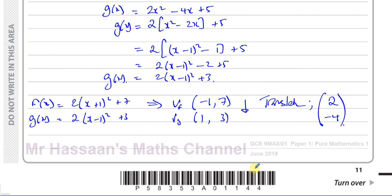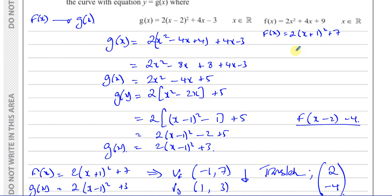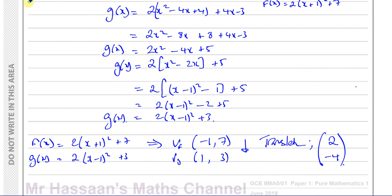We could also have seen that g of x is like f(x minus 2) minus 4. Let's verify: substituting x minus 2 into f gives 2 times ((x minus 2) plus 1) squared plus 7 minus 4, which is 2 times (x minus 1) squared plus 3 — exactly g of x. So that confirms the transformation. It's easier to complete the square first and then identify the transformation. That's the answer to part C.